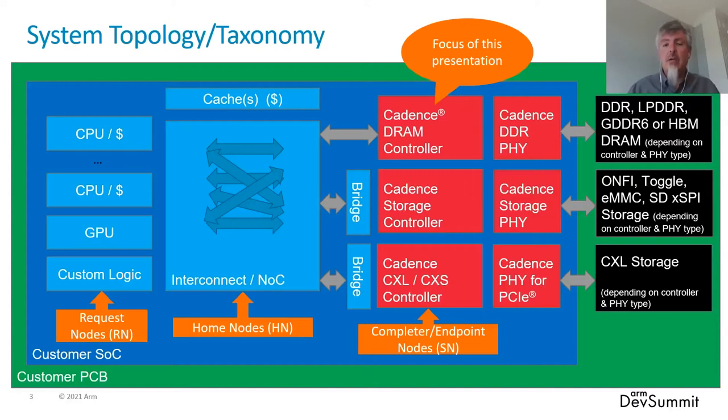The one we're focusing on today is the Cadence DRAM controller supporting AMBA 5 CHI protocol, but there are also other storage controllers and CXL controllers that we support as well. Together, these endpoints for memory are called completer nodes or endpoint nodes. There's also an older term for it — if you need to know what it is, you can find it in the spec.